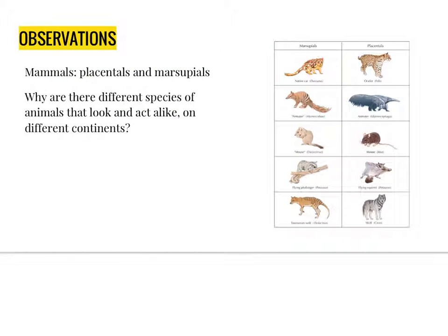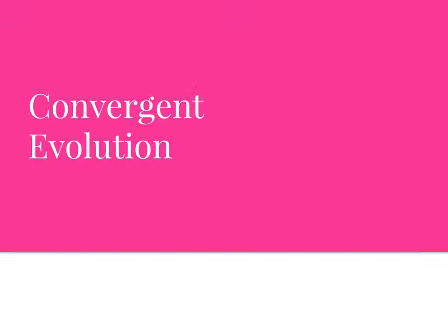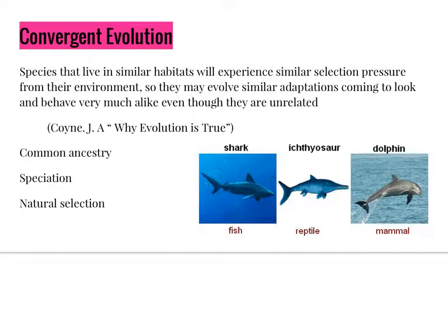A similar observation is that of placentals and marsupials. Marsupials, mainly found in Australia, and placentals, which are dominant everywhere else on the planet, are both mammals, differing mainly in their reproductive system. Marsupials don't have placentas and give birth to very underdeveloped young, as opposed to placentals, who give birth to more developed young. Besides this difference, several species of placentals resemble the many species of marsupials that exist. How is it possible for different species with similar characteristics to be found in separate but similar habitats? The answer is convergent evolution.